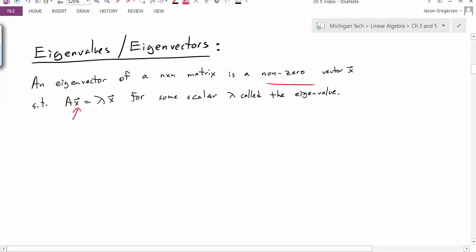for some scalar value lambda which we call the eigenvalue. This means our x's are the eigenvectors and lambda is the eigenvalue, and lambda is just some scalar number.